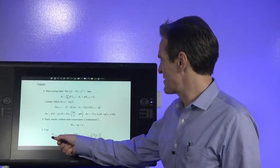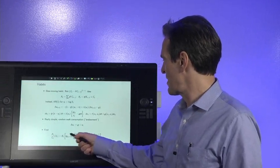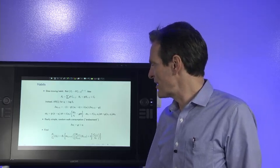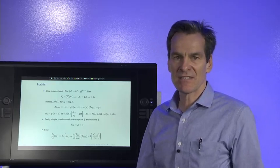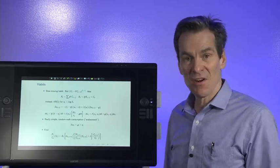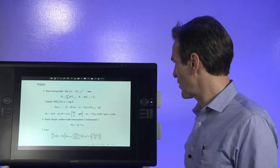Your job is to solve it. What we need to do is find the price consumption ratio as the discounted value of the future price consumption ratio. We do that numerically. And then once you find the price consumption ratio, returns, expected returns, and everything else follows. So we're ready to look at the pictures of how does this model actually work.